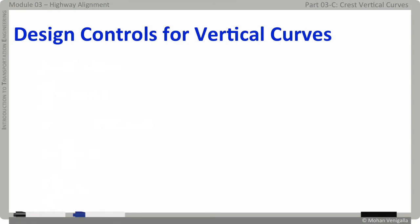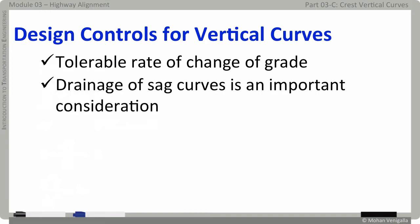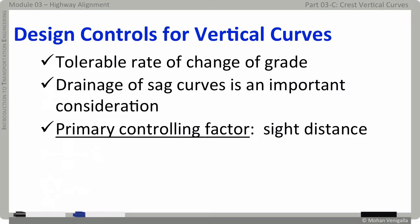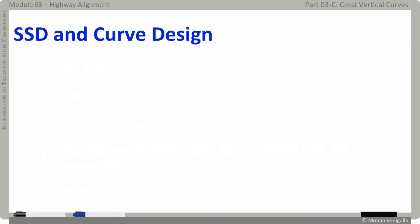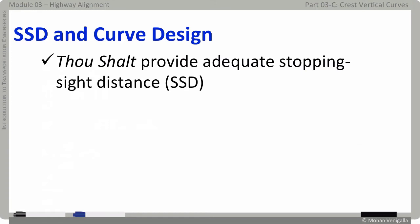Before we deal with crest curves or sag curves separately, let's first look at some basic tenets of design controls for vertical curves. First and foremost, rate of change of grade should be kept within tolerable limits. In other words, you should not feel like you are in a roller coaster while negotiating vertical curves. Second, if you are dealing with sag curves, drainage is an important consideration. Grades less than 0.5% are needed for drainage to outer edge of the roadways in a sag curve. Above all, the single most important consideration is adequate sight distance. Curves shall be designed so that minimum stopping sight distance is provided.